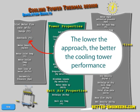Approach: the approach is the difference in temperature of the outlet cold water and the ambient air wet bulb temperature. The lower the approach, the better the cooling tower performance.